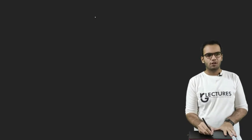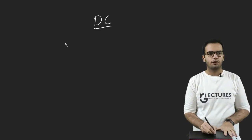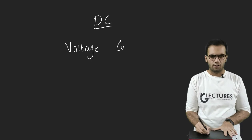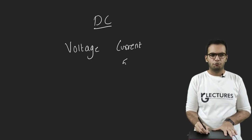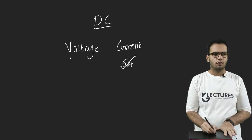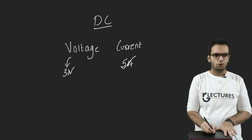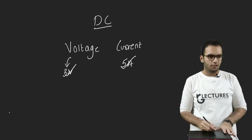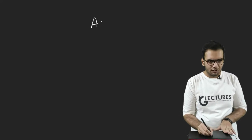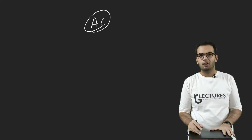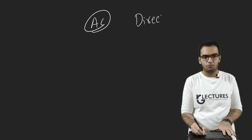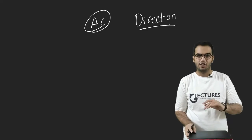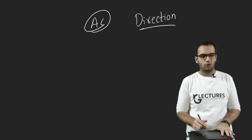When we used to study DC Circuits, there was a Voltage and there was a Current. If Current is 5 Amperes, it will be 5 Amperes; if Voltage is 3 Volts, it will be 3 Volts. But when we study AC Circuits, first of all there is a direction to both — there is a direction of Current and a direction of Voltage.